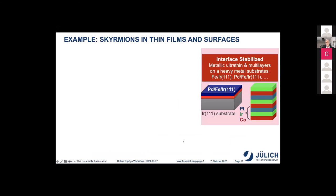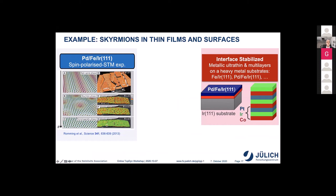These interface-type systems are very interesting because they also tie into technology through multilayers. Typically the multilayers consist of non-magnetic heavy elements like platinum or iridium, and one magnetic element such as cobalt or iron. Here I show an STM experiment from the Wiesendanger group. What you see in the upper panel is an STM image of palladium-iron-iridium: at B=0 Tesla you see a striped spiral phase, at 1 Tesla skyrmions precipitate out of the striped phase, with increasing field you get a skyrmion lattice, and at even higher field you reach the ferromagnetically saturated state.